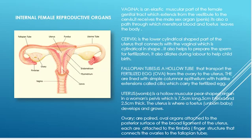The fallopian tube, also known as the uterine tube, is a hollow muscular organ about 10 centimeters long. It is made up of various parts: the isthmus, ampulla, infundibulum, and fimbriae. The isthmus is the part that connects with the uterus. The ampulla is the site of fertilization. The infundibulum is the lateral ending of the fallopian tube.